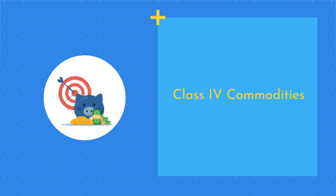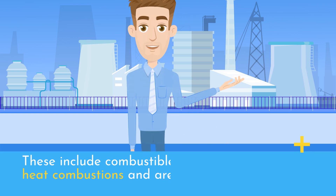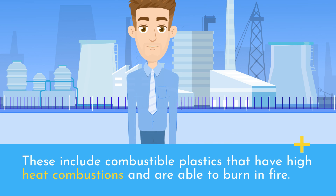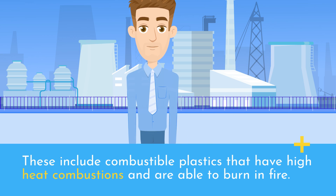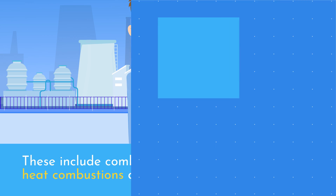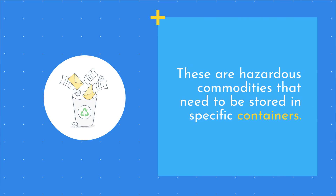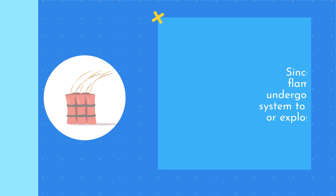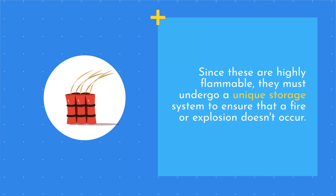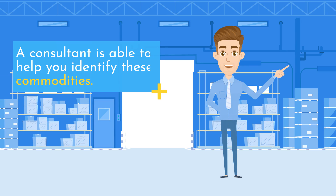Class IV Commodities: These include combustible plastics that have high heat combustions and are able to burn in fire. These are hazardous commodities that need to be stored in specific containers. Since these are highly flammable, they must undergo a unique storage system to ensure that a fire or explosion doesn't occur. A consultant is able to help you identify these commodities.